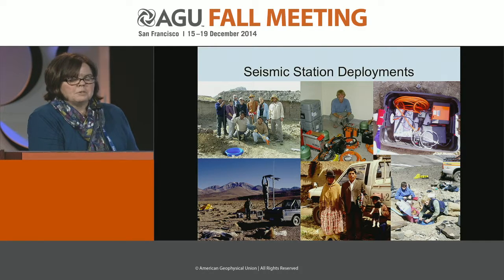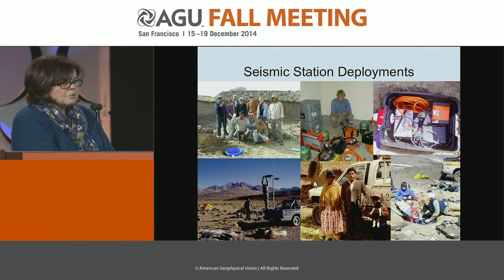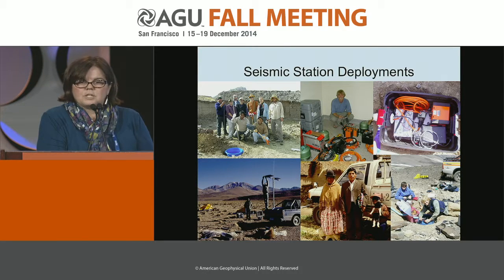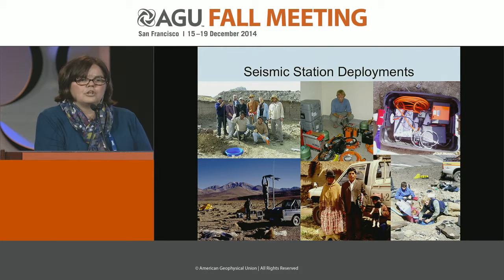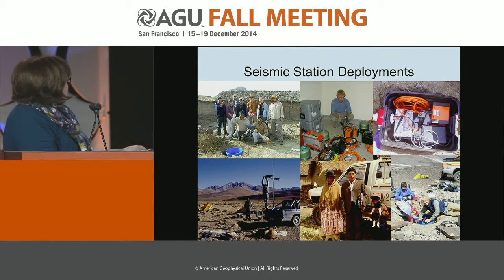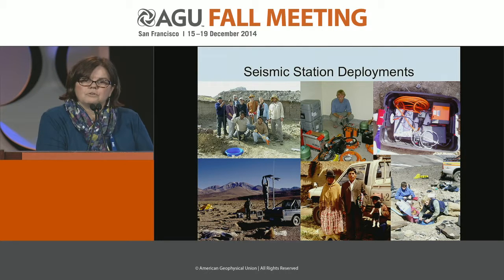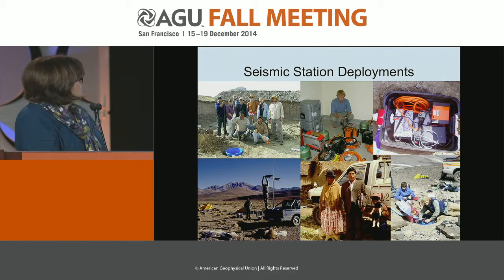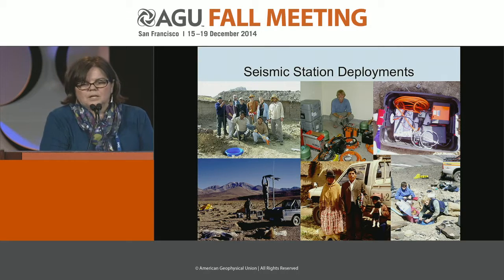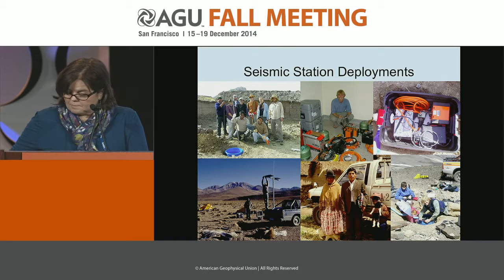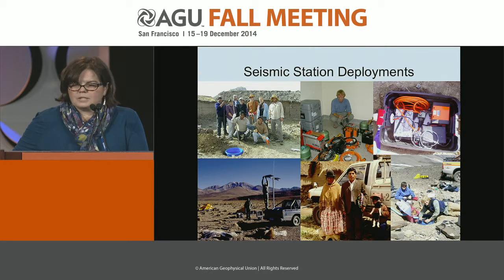It's not without its challenges. For seismic deployments, we need to find local families — like this Bolivian family — to host stations and provide security. Sometimes we have to get solar panels above the snow line since we can't access stations over winter. Other times we deploy at 5,000 meters elevation, which has its own challenges. But overall, with equipment that works quite well, many groups have gotten a lot of great data.